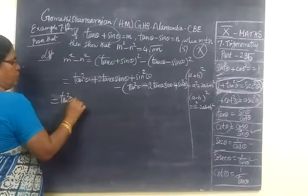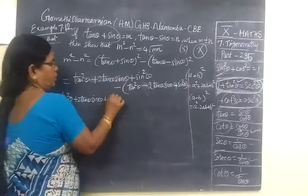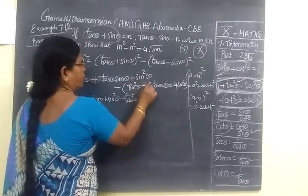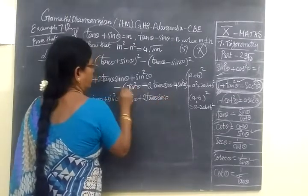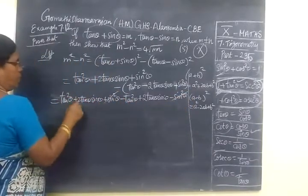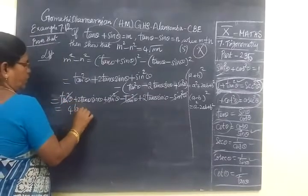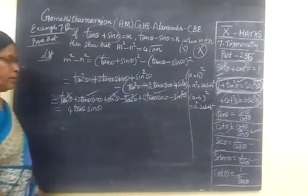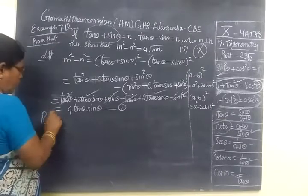So tan square theta plus 2 tan theta sin theta plus sin square theta. Take minus inside. So minus tan square theta, minus into minus plus 2 tan theta sin theta. So these cancel. So 4 tan theta sin theta. Now we mark it as 1.